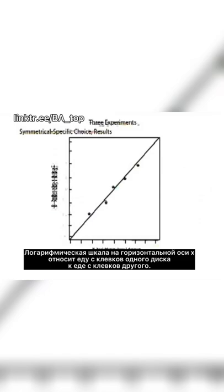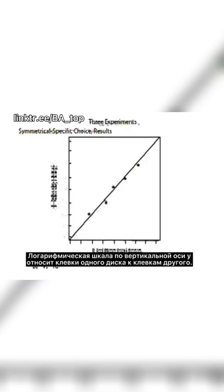On the x-axis is, on a log scale, the ratio of the reinforcers obtained by pecking one key divided by the reinforcers obtained by pecking the other key. And on the y-axis is the number of pecks on one key divided by the number of pecks on the other key.